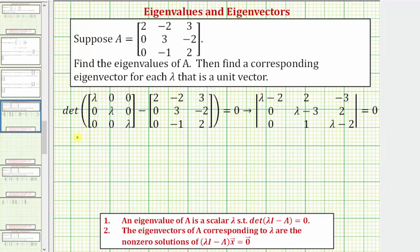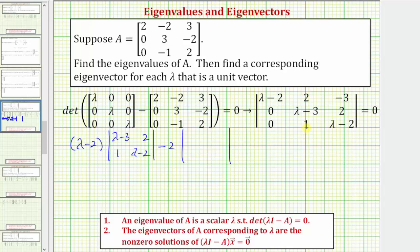The first element in row one is the quantity lambda minus two, and then we'll have times the two by two determinant formed by eliminating row one and column one, which will give us lambda minus three, two, one, and lambda minus two. Then we have minus the next element in row one, which is two, times the two by two determinant formed by eliminating row one, column two, so we have zero, two, zero, lambda minus two, plus the third element in row one, which is negative three, times the determinant formed by eliminating row one, column three, so we'd have zero, lambda minus three, zero, one, and this must equal zero.